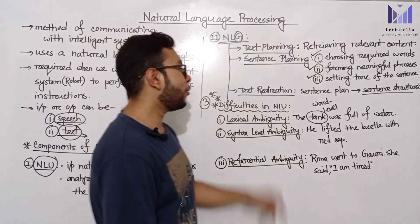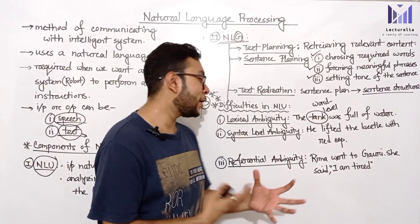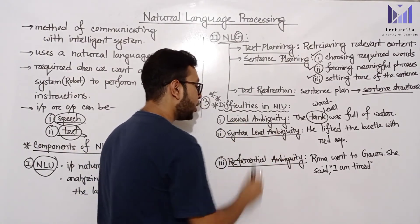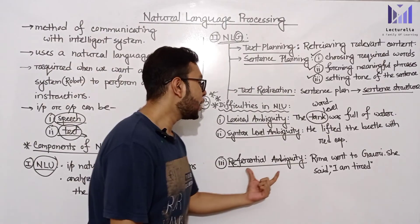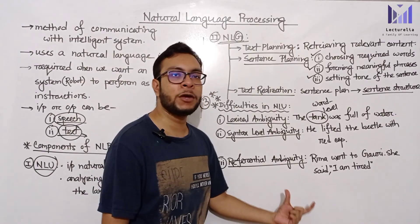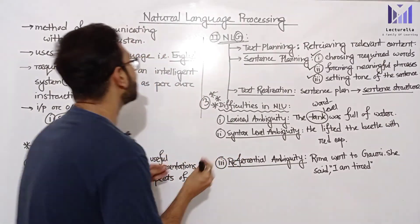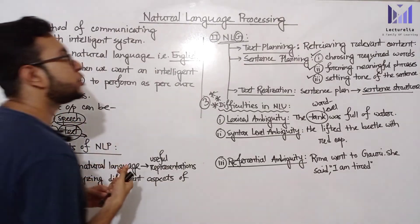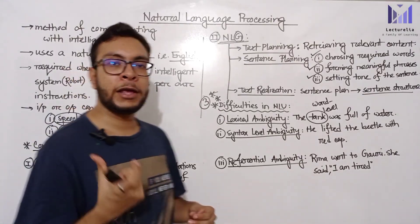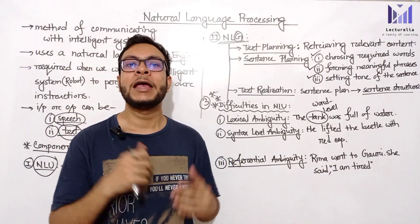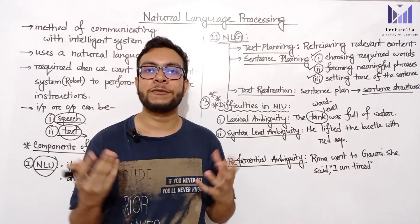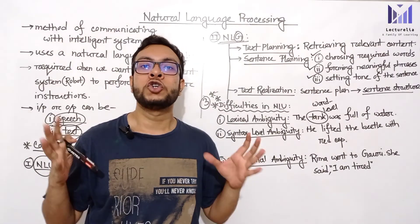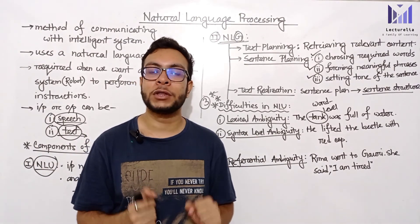This covers the basics of Natural Language Understanding. To summarize: there are three types of ambiguity — lexical ambiguity, syntax level ambiguity, and referential ambiguity. This is the basic overview of Natural Language Processing. The next topic covers the steps of NLP, which will be discussed in detail in the next video.